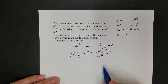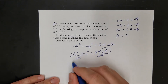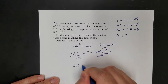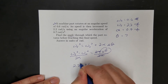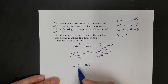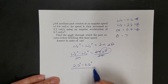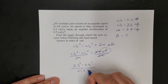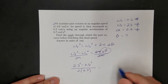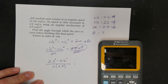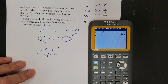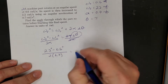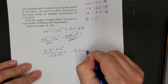Let's plug in and solve. Final is 2.2 squared minus 0.6 squared — don't forget to square those — divided by 2 times alpha, so 2 times 0.7. Doing that gives me 3.2 radians.